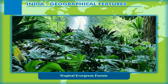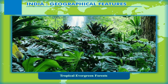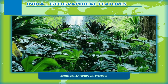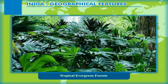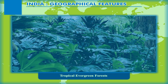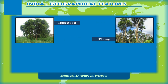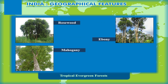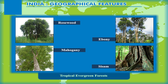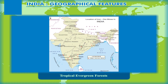These dense forests are also characterized by climbers and dense undergrowth. Some useful trees include rosewood, ebony, mahogany, and shisham, which have great commercial value. These forests are found in the western slopes of the Western Ghats, the eastern Himalayas, north-eastern India, and the Andaman and Nicobar Islands.